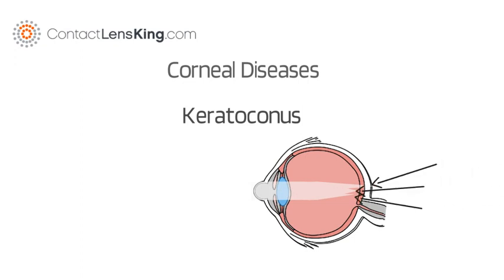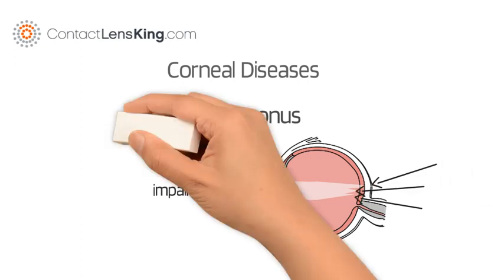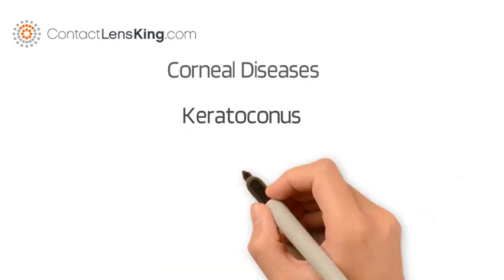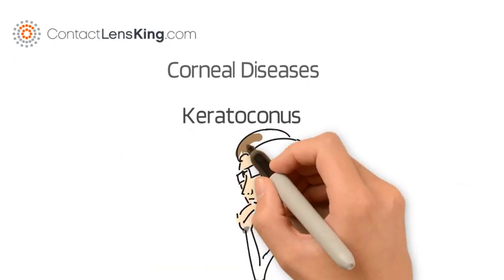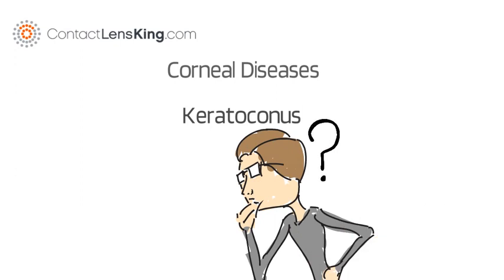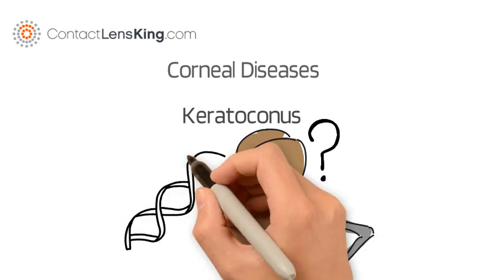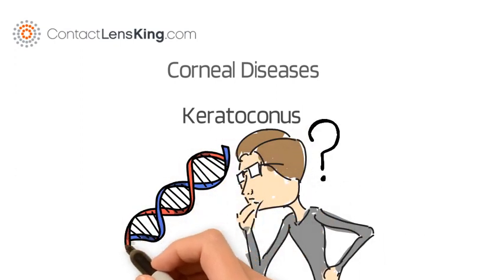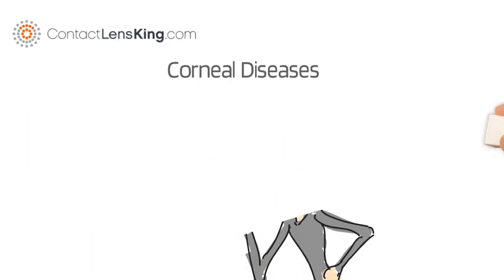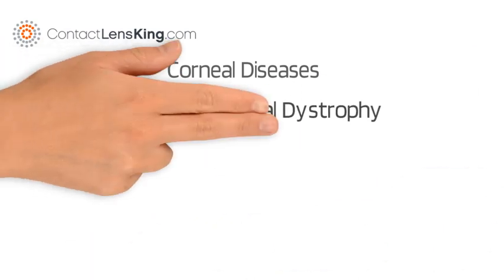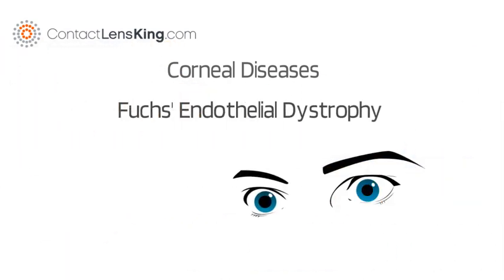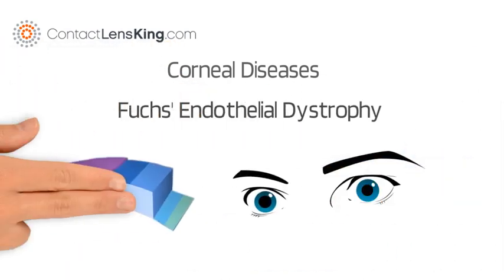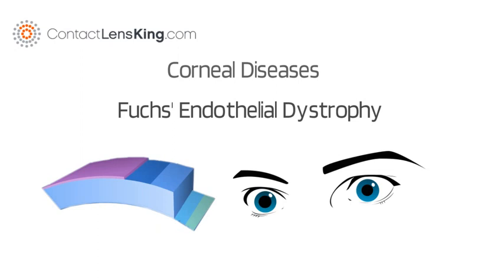Keratoconus results in impaired vision. The causes behind keratoconus are a mystery, although in some cases genetics seems to play a role. Fuchs endothelial dystrophy is a hereditary abnormality of the inner cell layer of the cornea.